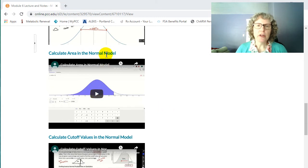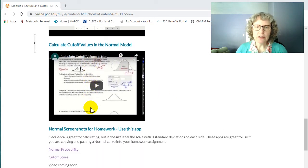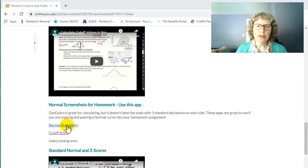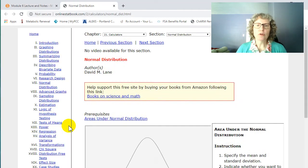So you've calculated area with a normal model. You've calculated cutoff values. And here I've put in the content page, I've put two different apps to use. So the first one, I'll click on it, is normal probability.